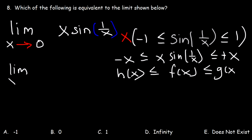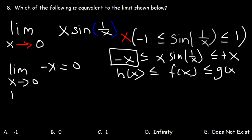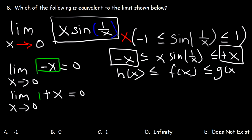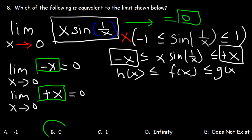So the limit as x approaches 0 for h of x, which is really negative x, that's equal to 0. Now the limit as x approaches 0 of g of x, which in this case is positive x, that too is equal to 0. So therefore the limit as x approaches 0 of x sine of 1 over x, since it's between negative x and x, it too must also equal 0. So therefore B is the right answer, according to the squeeze theorem.